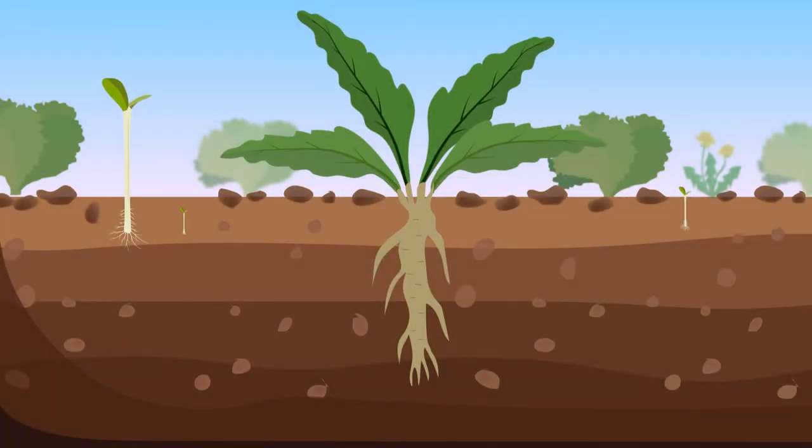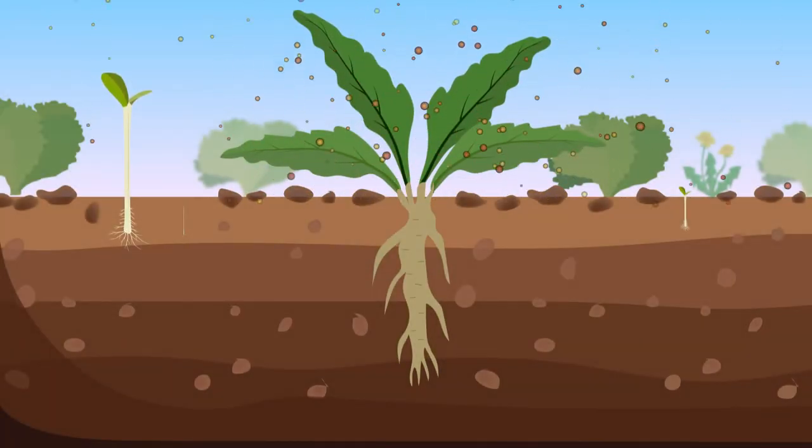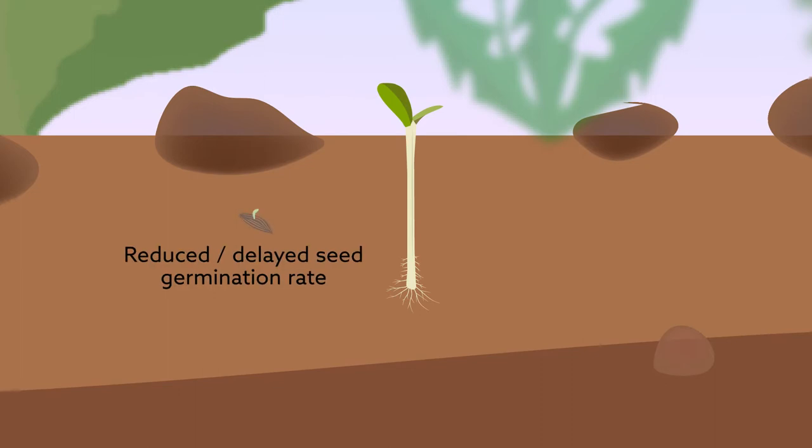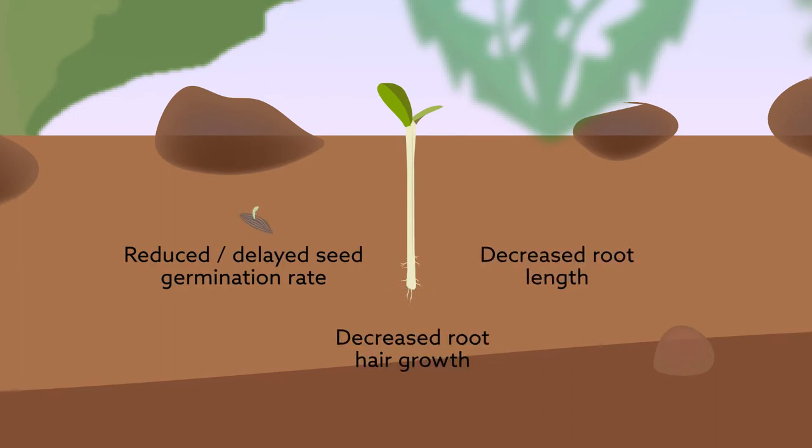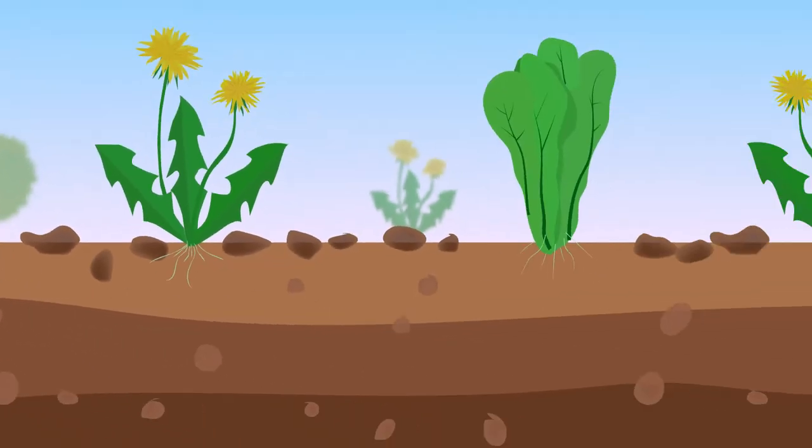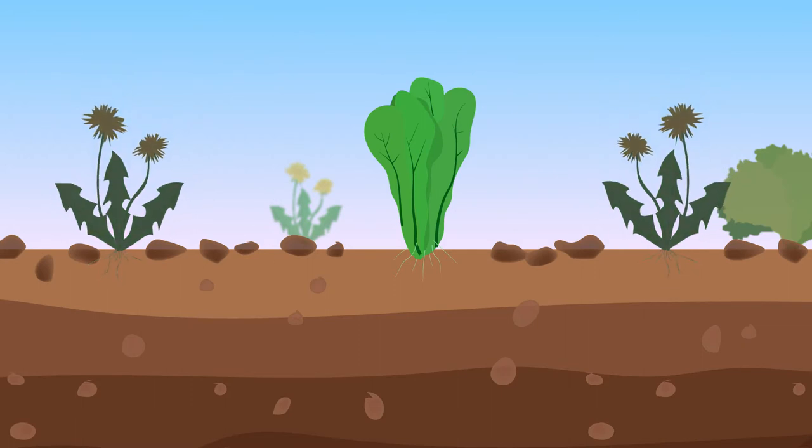AITC has been shown to have allelopathic effects on lettuce, including reduced and delayed seed germination rates, decreased root hair growth, and decreased root length. Mustard green also contains AITC and is widely utilized to control weed growth in current agriculture production.